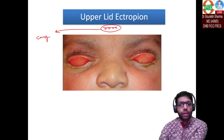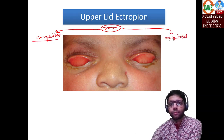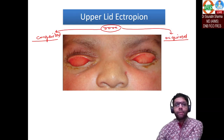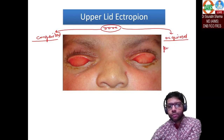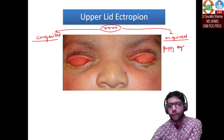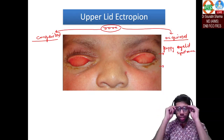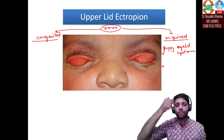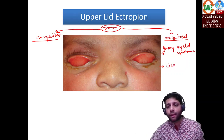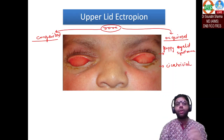Upper lid ectropion can be congenital — rare eversion of the upper eyelid. Acquired causes include floppy eyelid syndrome, where while sleeping the eyelids evert, and cicatricial causes such as chemical burns of the upper eyelid which retract it upward. Remember floppy eyelid syndrome as the key association for upper eyelid ectropion.